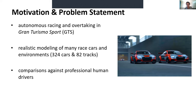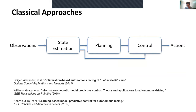Gran Turismo Sport is a unique platform for testing autonomous systems because it allows simulating very high-fidelity race cars and race tracks. It also allows us to compare the performance of our autonomous system directly against professional human drivers. As seen in previous presentations, autonomous racing can be solved using classical approaches that decouple the problem into sub-modules: state estimation, planning, and control. These have achieved great success in controlling physical vehicles at high speed in the real world.